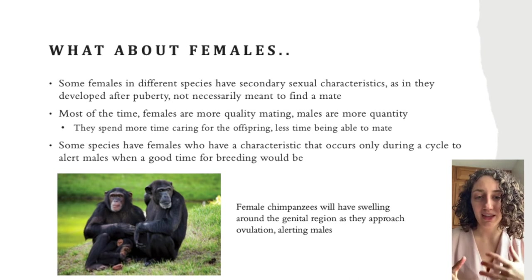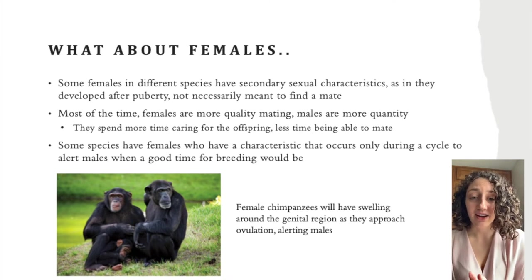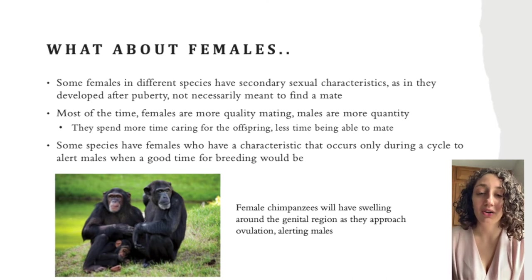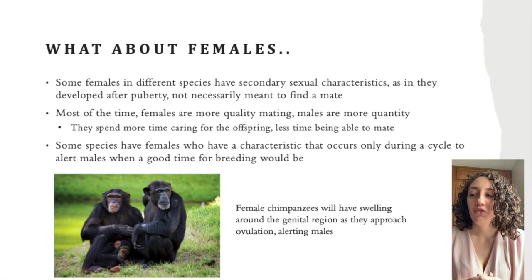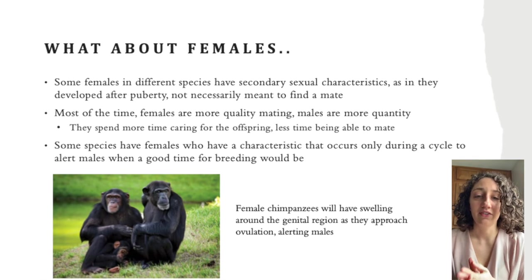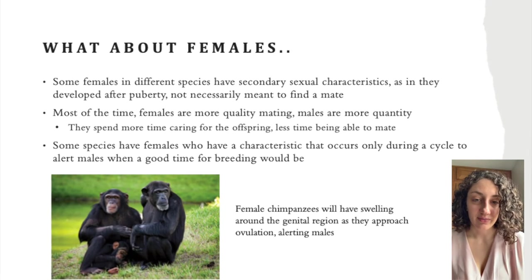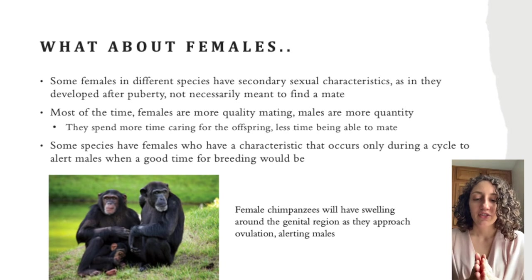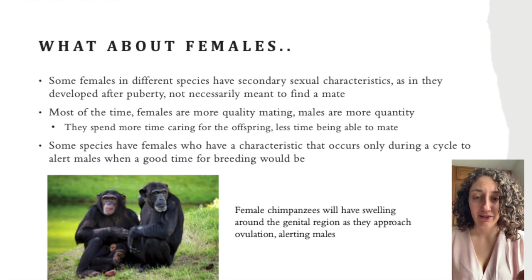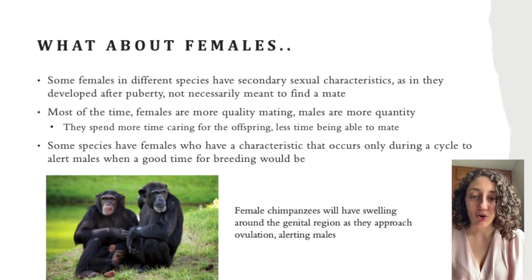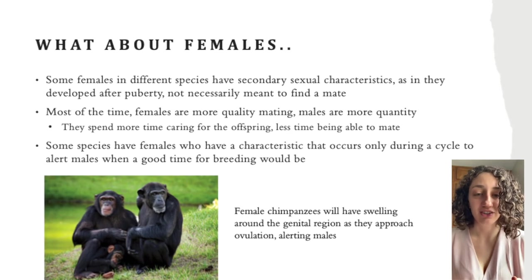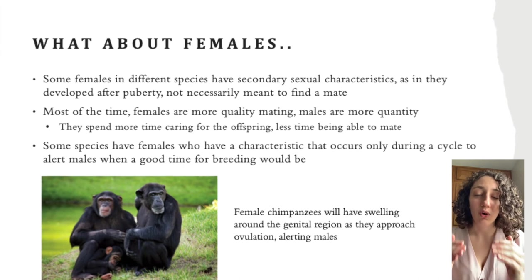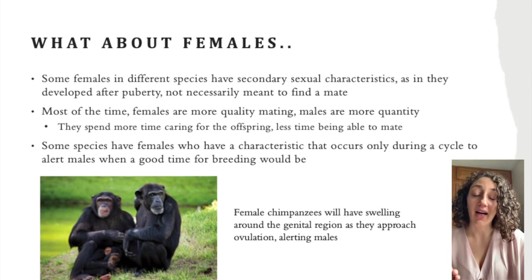If you think about the animal kingdom, the goal is to have offspring that survive. A female goes for quality rather than quantity, whereas a male is able to go for quantity. For example, an elephant is pregnant for 22 months. During that time, a male can reproduce with other females, and the more offspring he has, the greater the chance many survive. A female needs to pick the right male because she has limited reproductive time in her lifetime, so she wants quality offspring that will pass on her genetics.